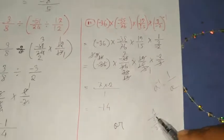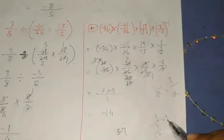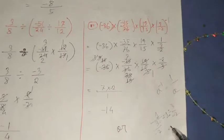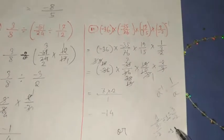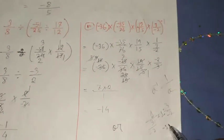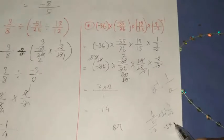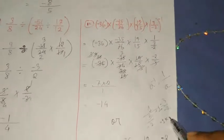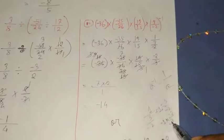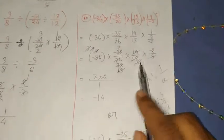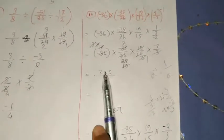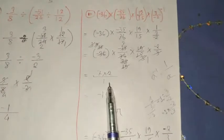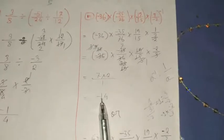That means 1 divided by 3 by minus 2. If you have this type of problem, change the division sign and put a multiplication sign, and take the reciprocal of the next term. After cancelling, you will get 7 into minus 2 with denominator 1, which is minus 14.